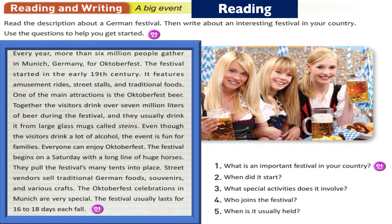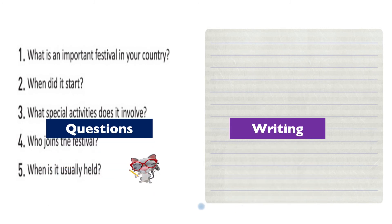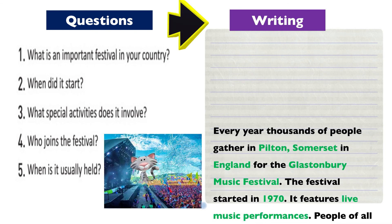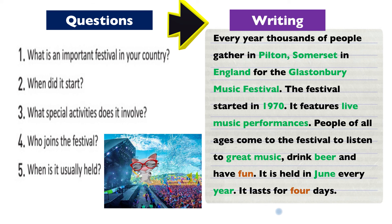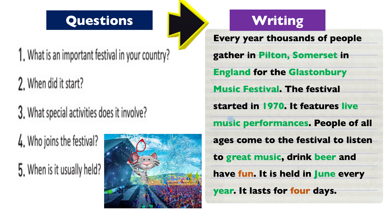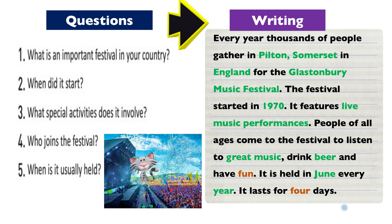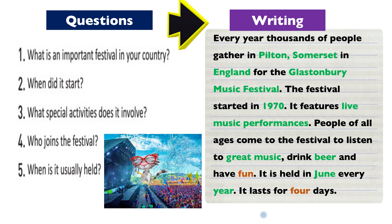The event is fun for families — everyone can enjoy Oktoberfest. It begins on Saturday with a long line of huge horses pulling the festival's tents into place. Street vendors sell traditional German foods, souvenirs, and crafts. The festival usually lasts 16 to 18 days each fall. Professor Neil's example: every year thousands gather in Pilton, Somerset, England for the Glastonbury Music Festival, started in 1970. It features live music performances; people of all ages come to listen to great music, drink beer, and have fun. It is held in June and lasts four days.